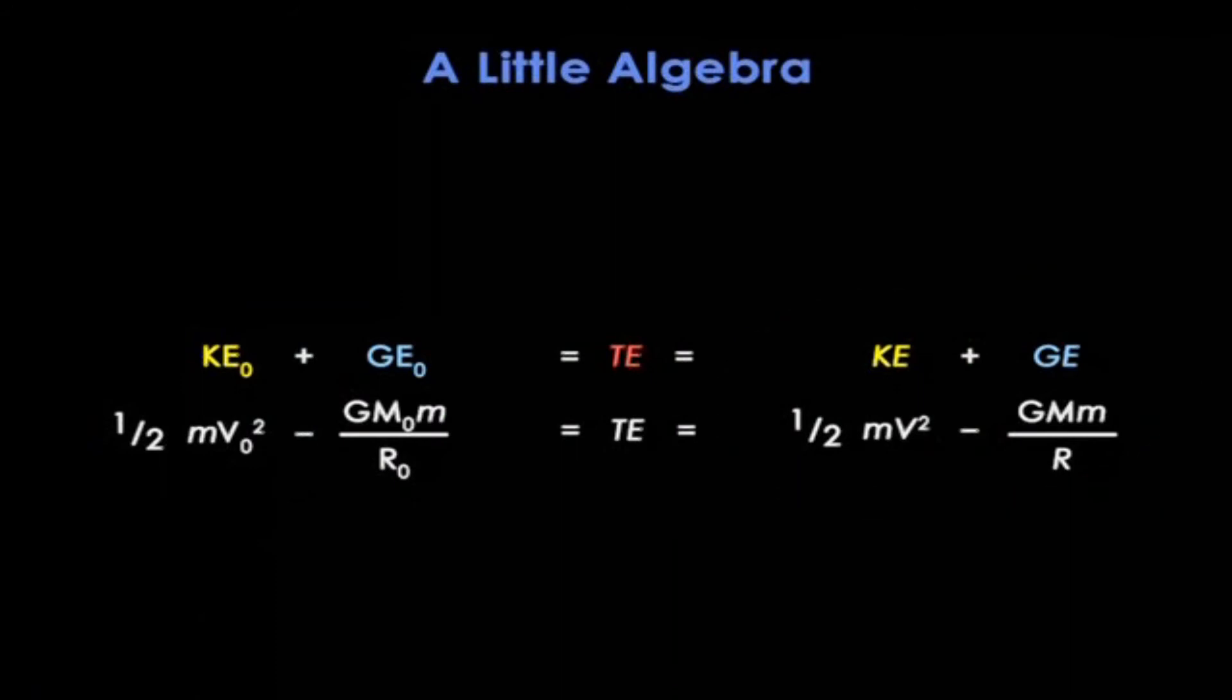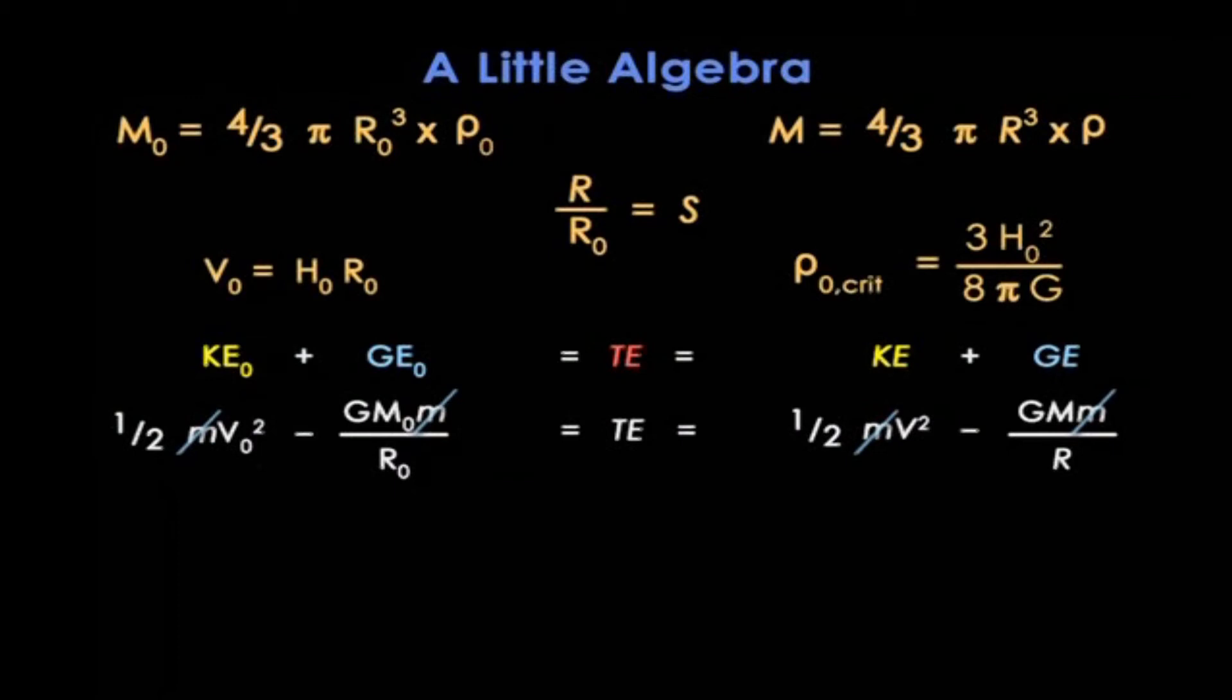Now, above this equation, are several small equations, all of which we've met before. Briefly, the sphere's mass is its volume times its density. The rock's initial velocity is the Hubble constant times the initial radius. We have the formula for the critical density, and the formula for the scale factor.